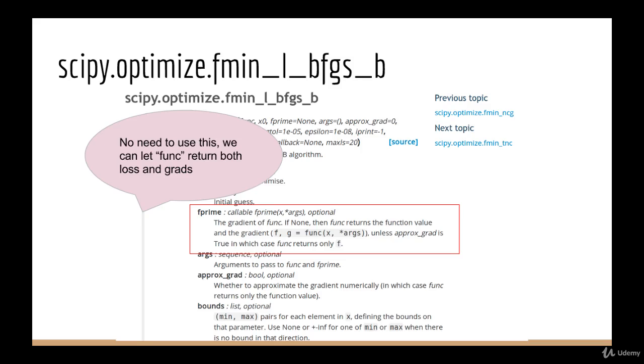And number two, the second special circumstance where you don't have to pass in the gradient is if you set the approximate argument to true. This is not ideal for us because we already know how to calculate the gradient. There's no need to approximate it. The exact value is always going to be much better. Furthermore, approximating the gradient is also going to be slow, so it's best not to do it.